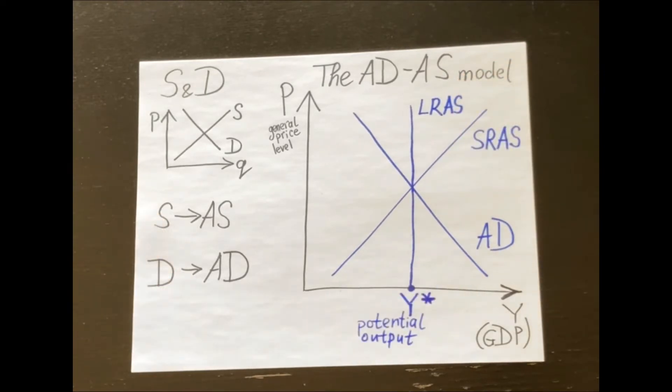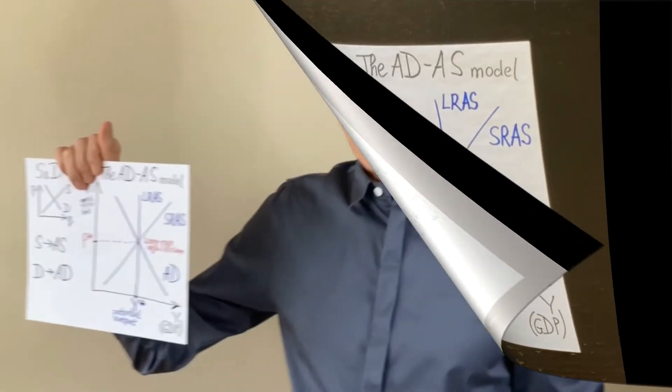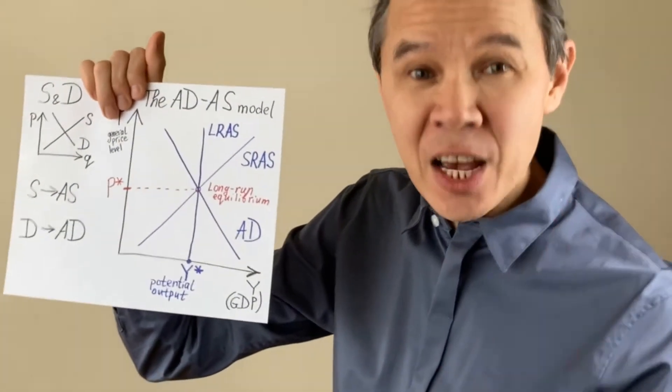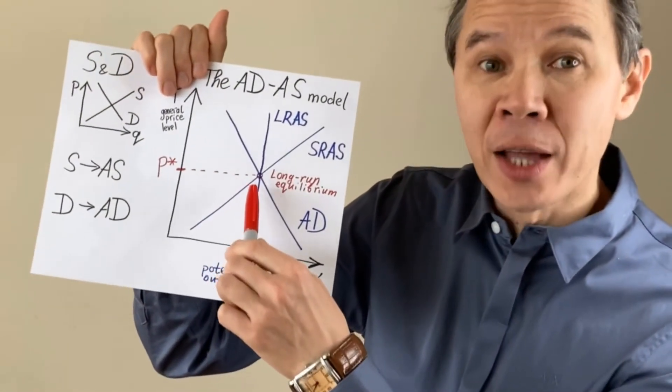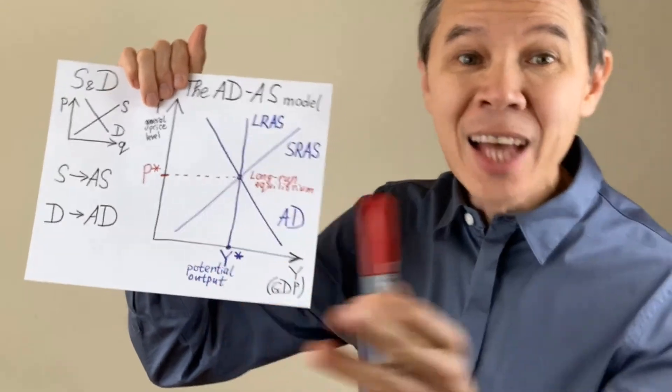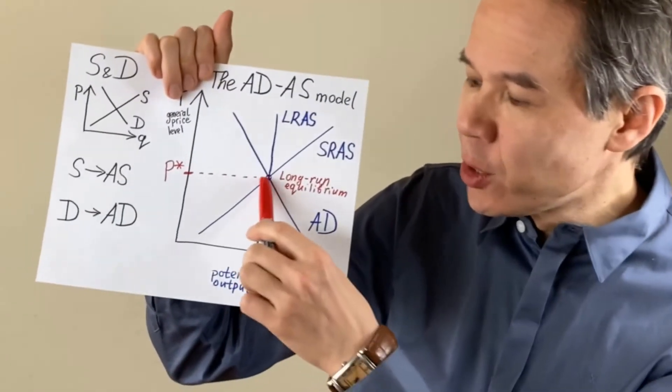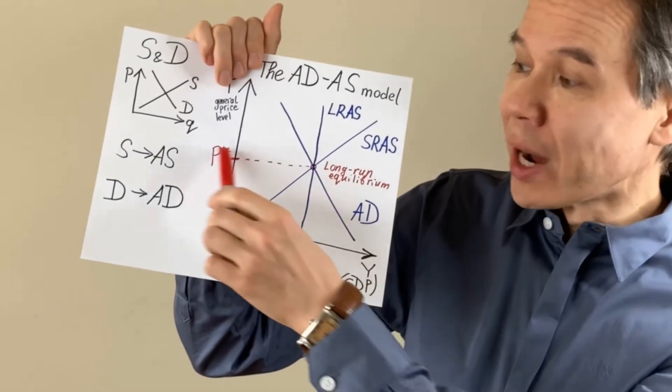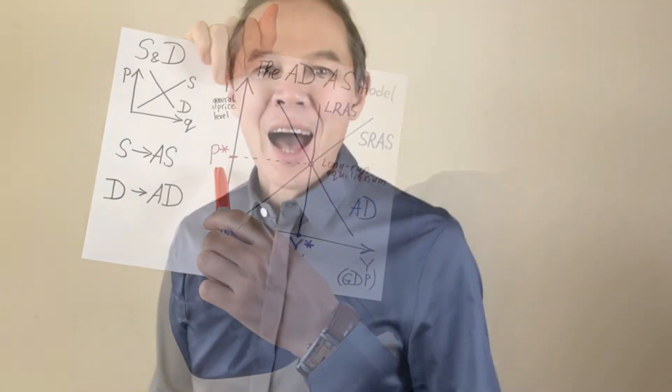And the potential output is the GDP produced at full employment. And when all curves intersect each other, that intersection is called a long-run equilibrium. And at the long-run equilibrium, the economy produces its potential output at the equilibrium price level. And it means that the economy is in a situation that is normal, stable and steady.